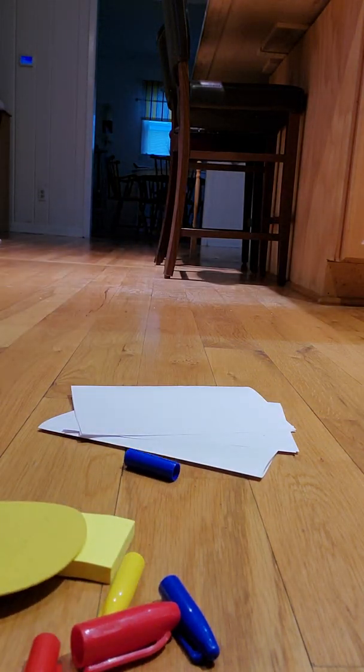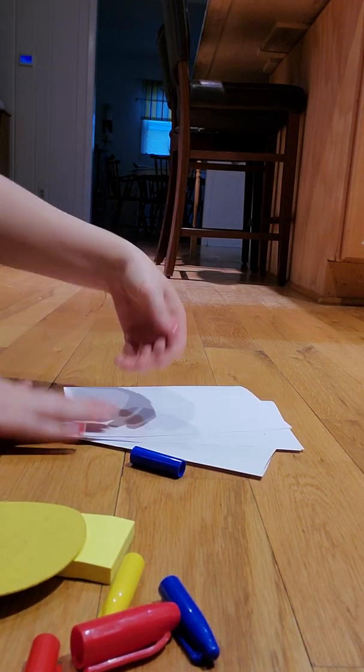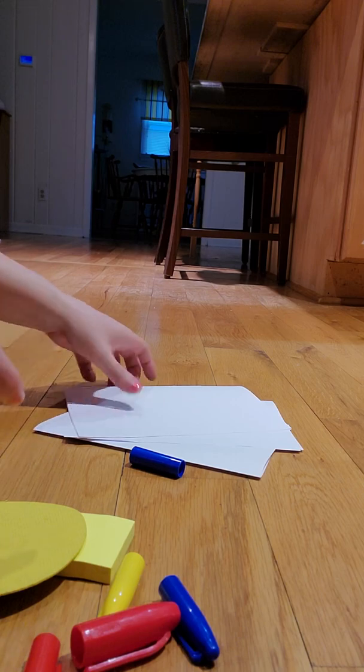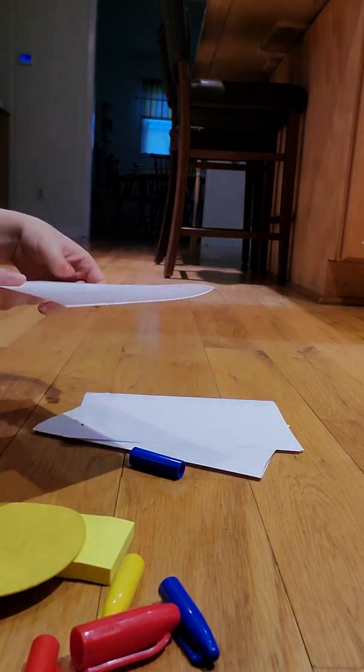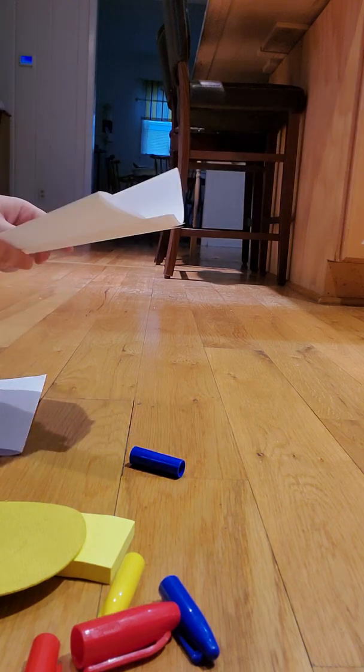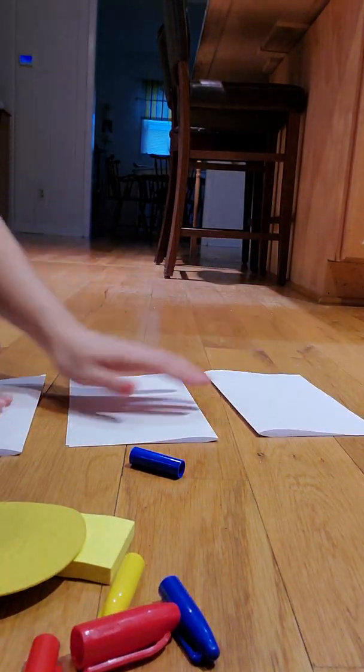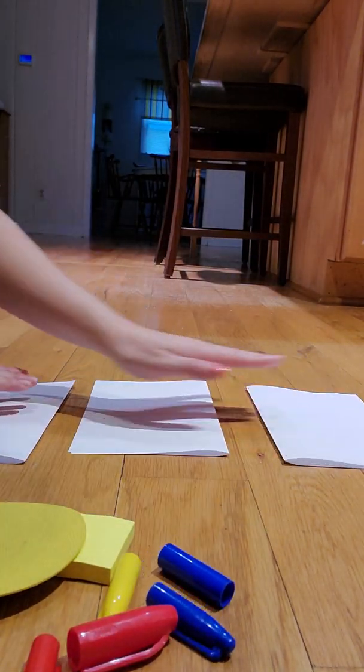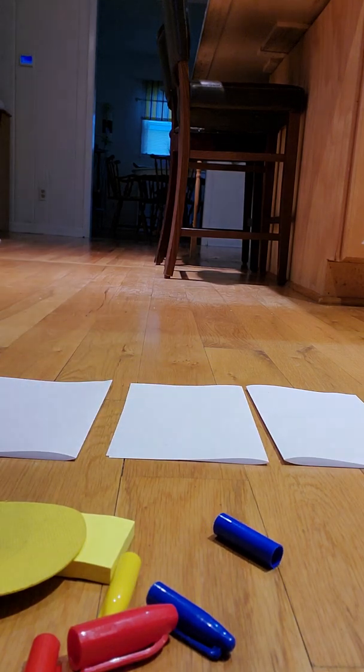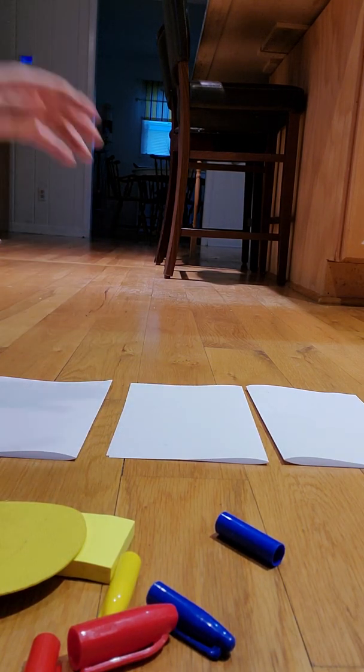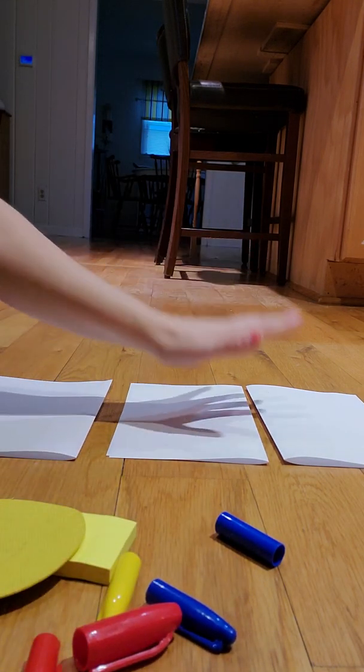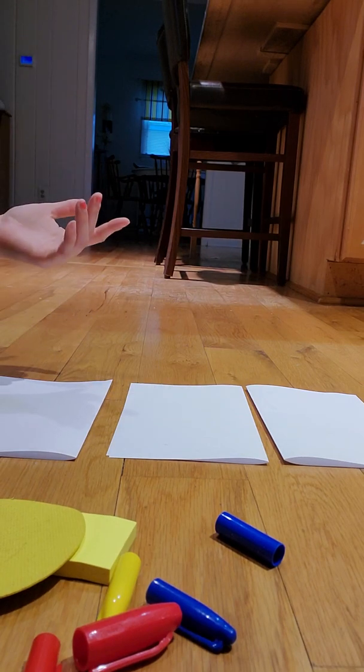You'll also need something that your child can put these objects on. I'm just using blank pieces of paper, so I have three pieces. You can use a cup, bowls, plates, anything like that. It's just a place so the kid knows where to put the object.